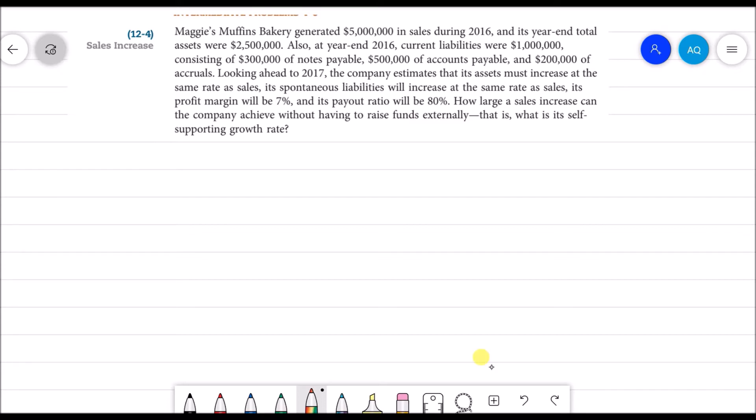So we have $2.5 million of assets. Because the assets have a limited production capacity, we can increase our sales to a certain level by using these assets. If we have to cross that certain level of sales, we have to make some more investment into our assets. So in this example, we want to check how much sales we can increase without generating funds externally, without increasing our assets. With the existing asset base, how much more sales we can achieve?